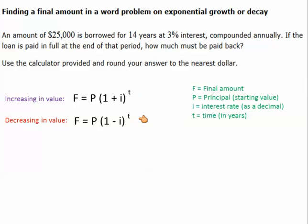Now, notice the only difference between the two formulas is if it's increasing, we're going to add the interest rate as a decimal with 1. If it's decreasing value, we're going to take 1 minus the interest rate as a decimal. Alright, so let's go up here and read our problem and see which formula we're going to use today.